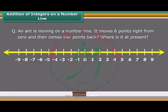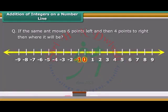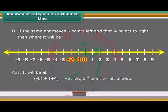An ant is moving on a number line. It moves six points right from 0 and then comes two points back. Where is it at present? It will be at 6 plus minus 2 is equal to fourth point to the right of 0. If the same ant moves six points left and then four points to the right, then where it will be? It will be at minus 6 plus plus 4 equals minus 2, that is, second point to left of 0.